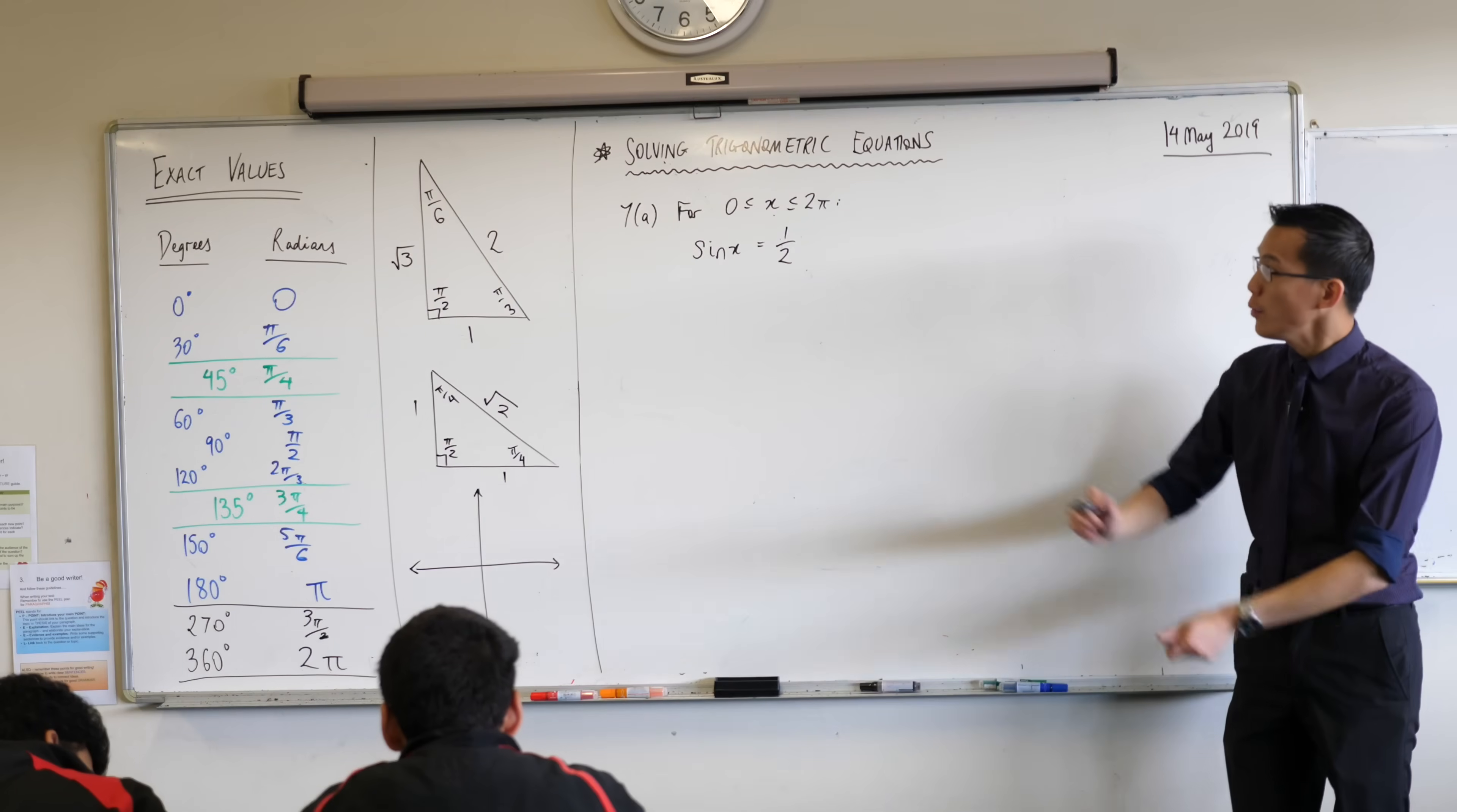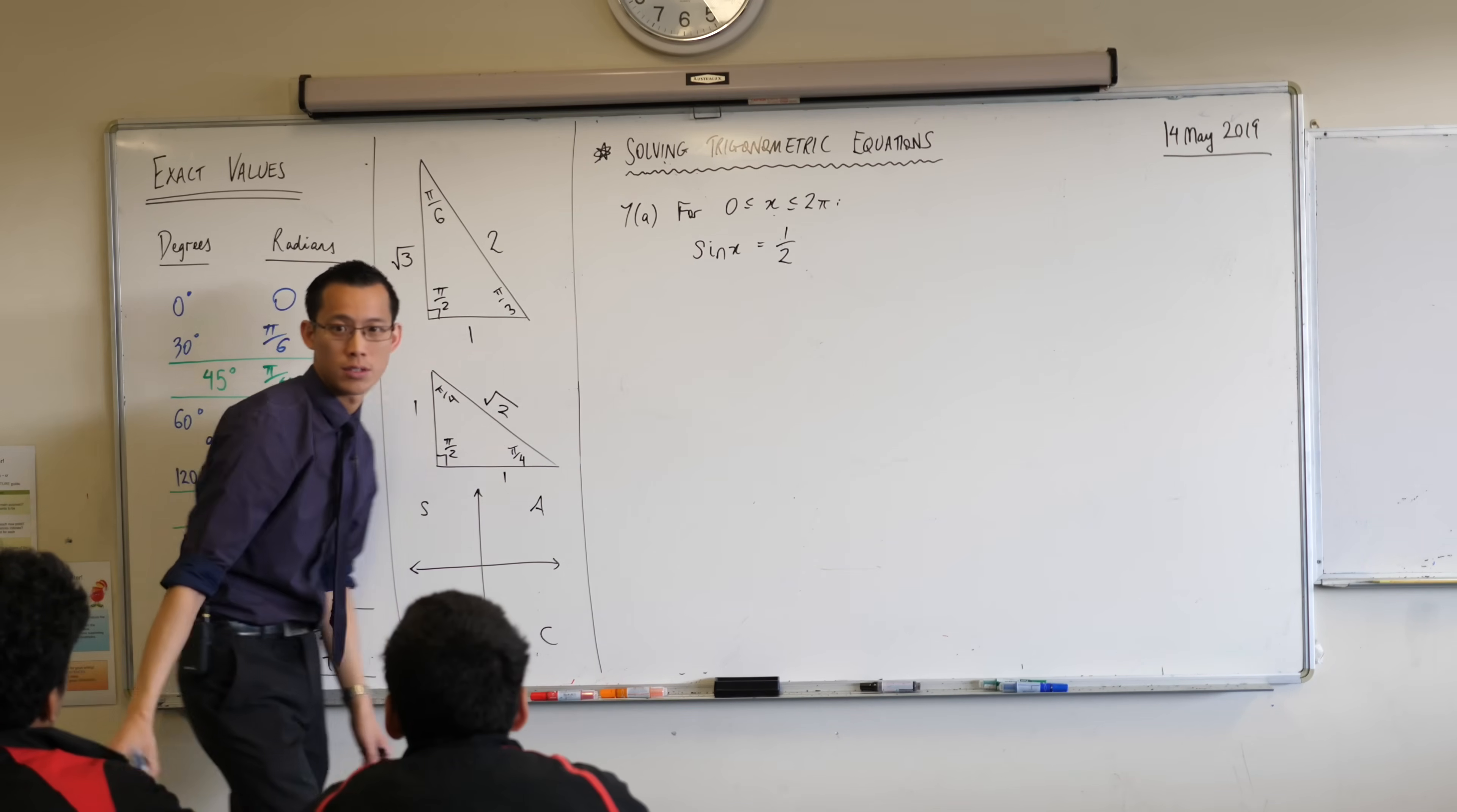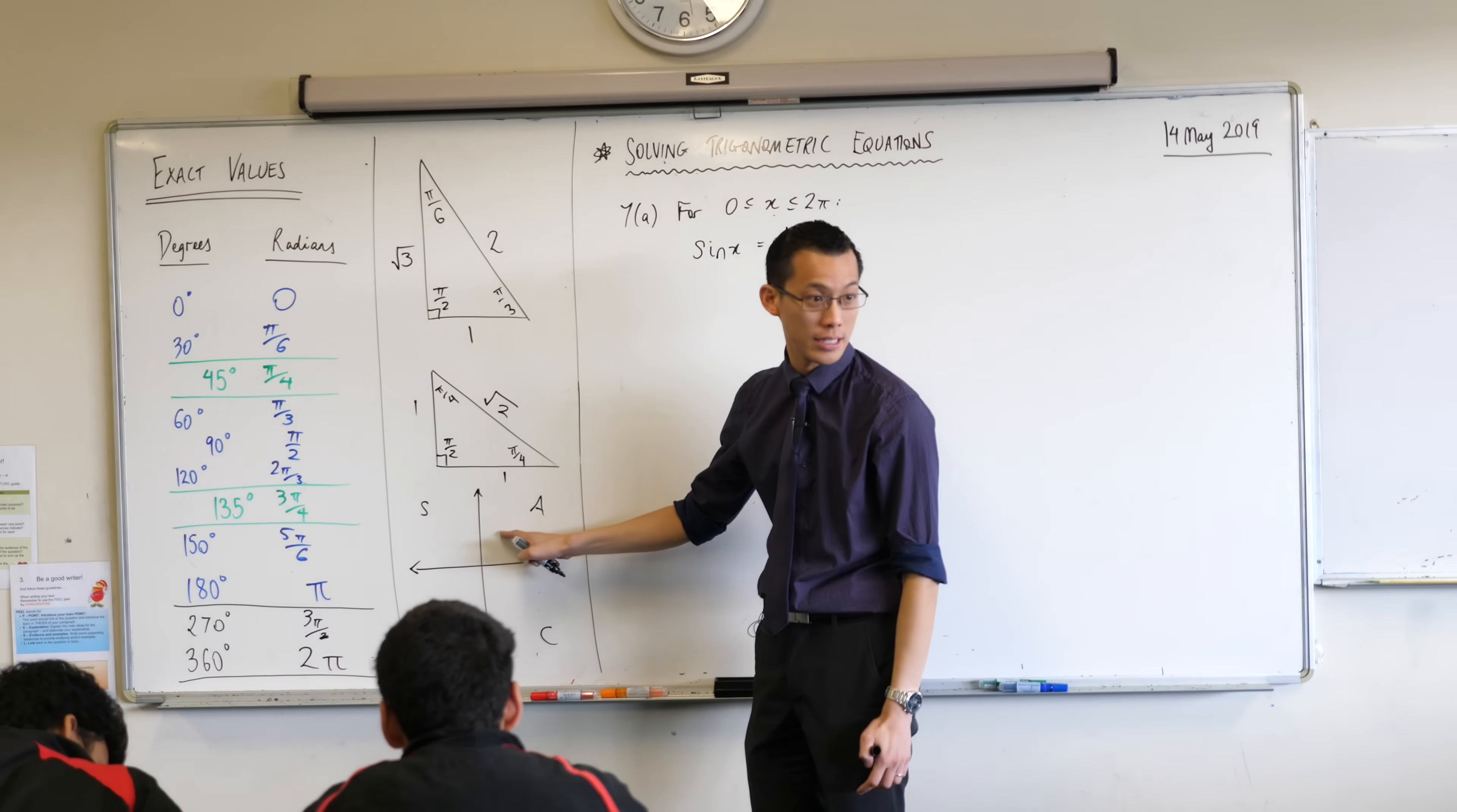One last thing. When we were solving trigonometric equations in the past you may recall we used this quadrants diagram. Do you remember that? We would say all stations to central? Some of you are less familiar with this because it was looked at in 5.3. When we use this we would say this is acute angles 0 to 90 right? But I'm not going to say 0 to 90 degrees anymore.